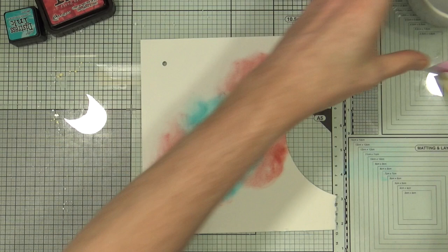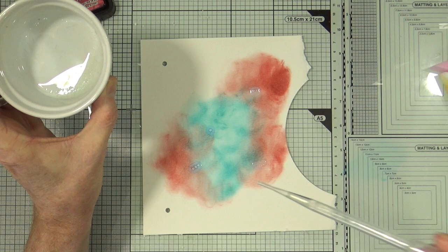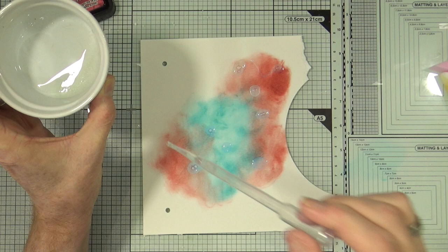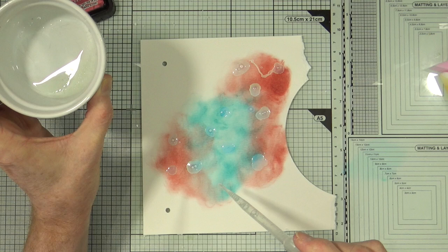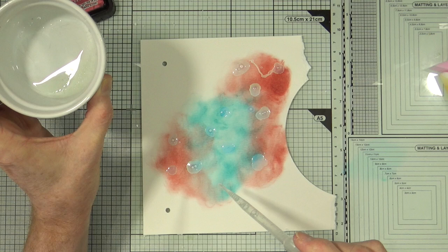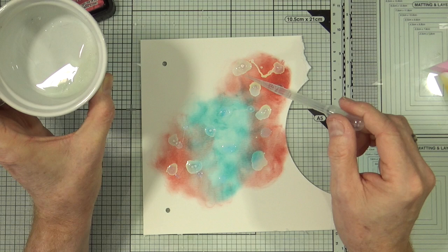So fire brick and peacock feathers, just on a piece of watercolour card, a piece of scrap watercolour card. Now I have a pipette here. So I'm going to just soak up some of that bleach and I'm going to put some random blobs. And already you can start to see that there is some reaction with the colour. So immediately, look at that.